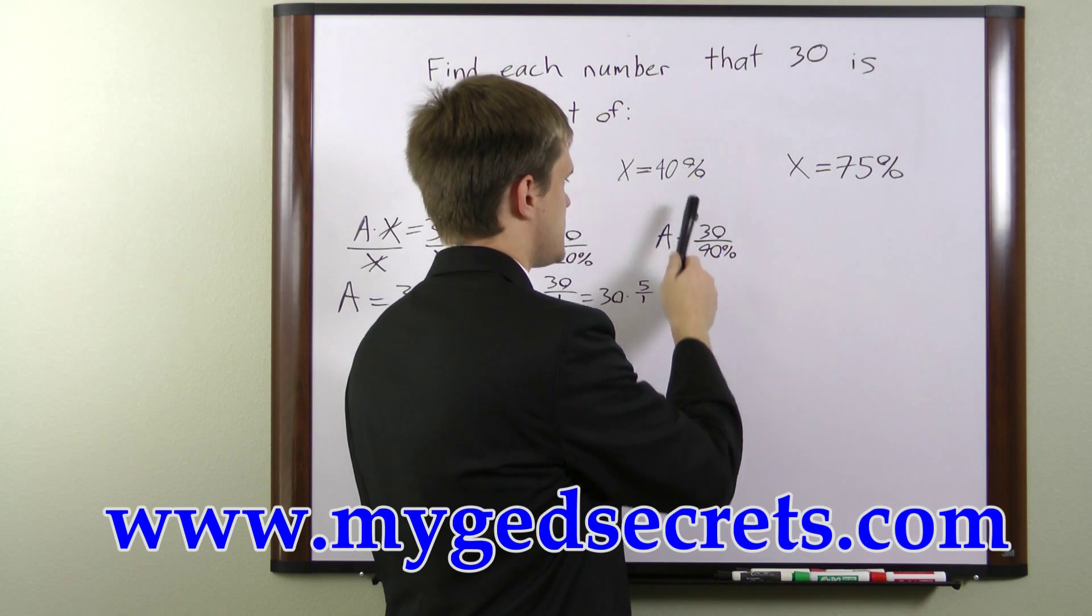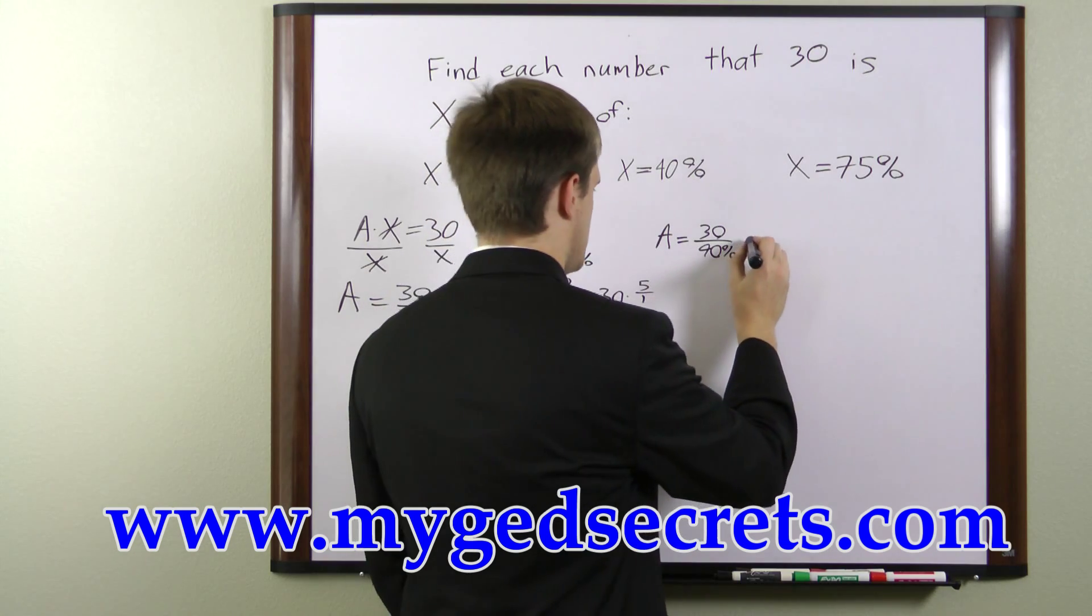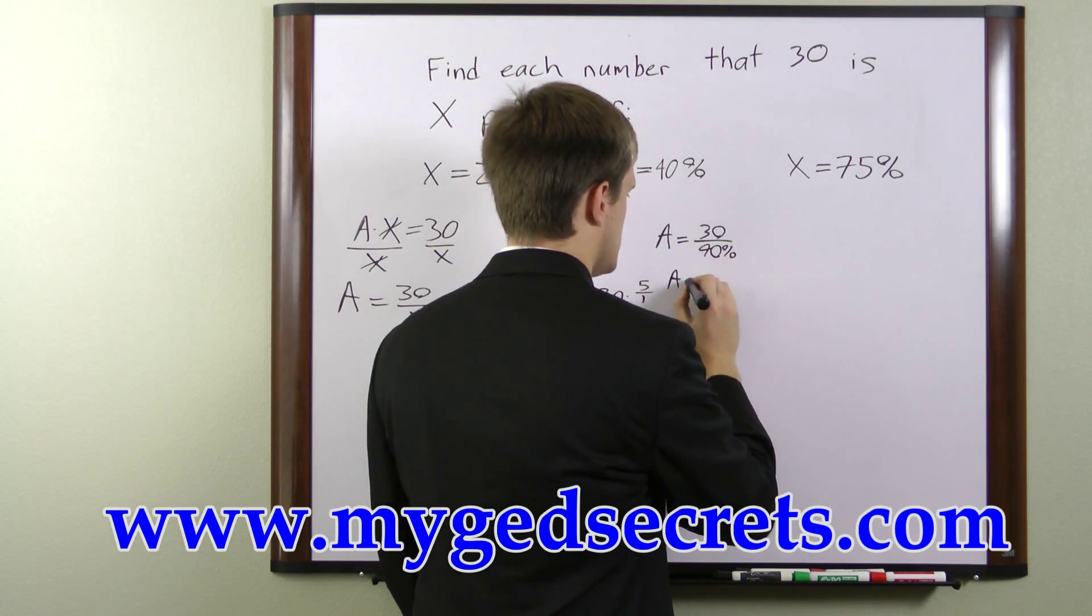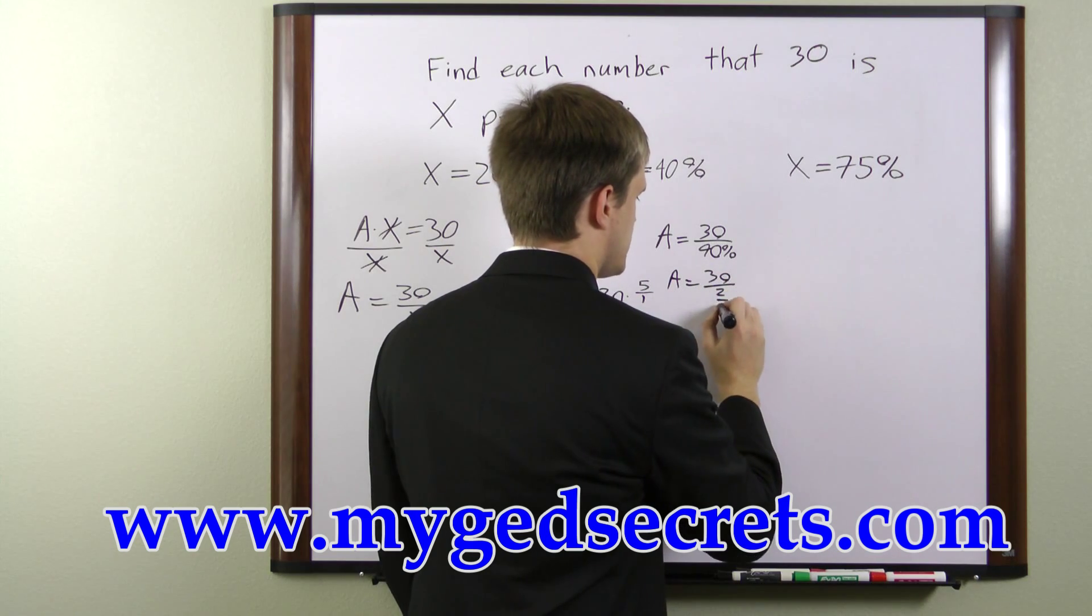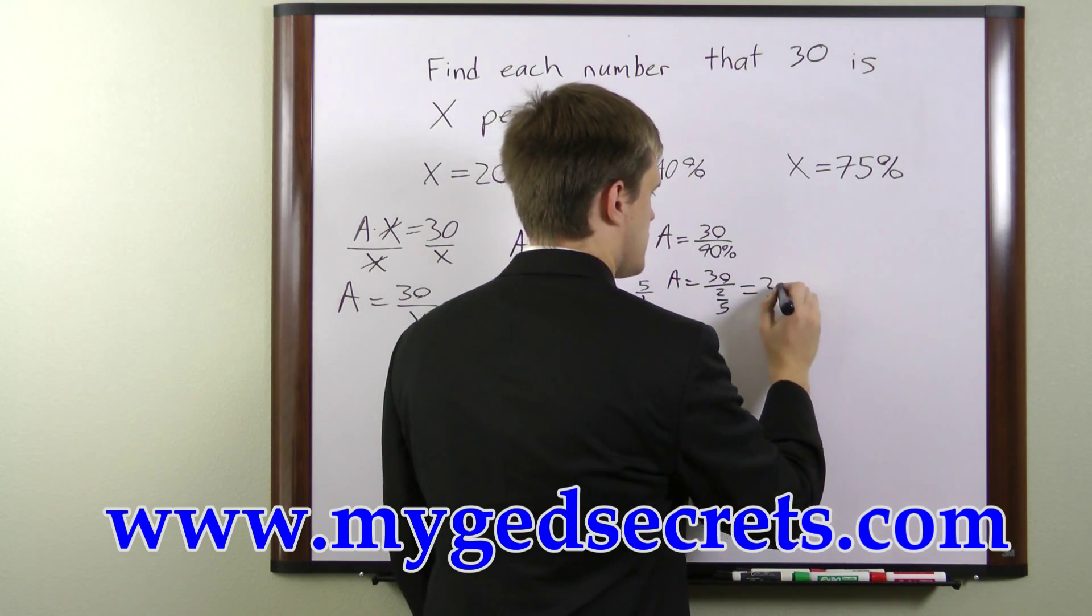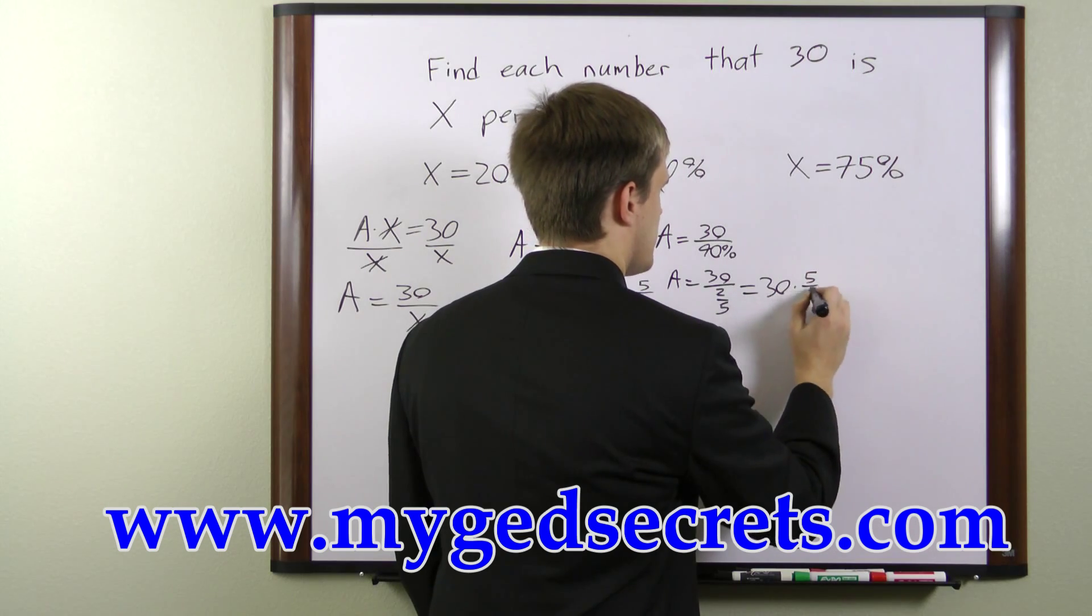40% is the same as 2/5, so a is equal to 30 over 2/5, or 30 times 5 over 2.